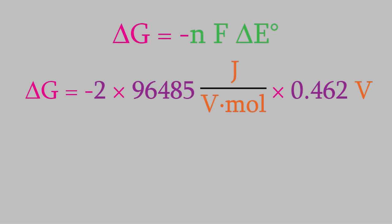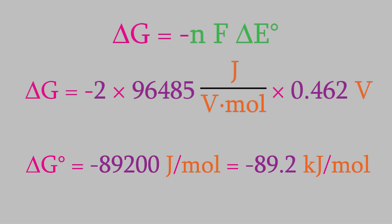Now, we just solve the equation. We get a delta G of negative 89,200 joules per mole, which is negative 89.2 kilojoules per mole.